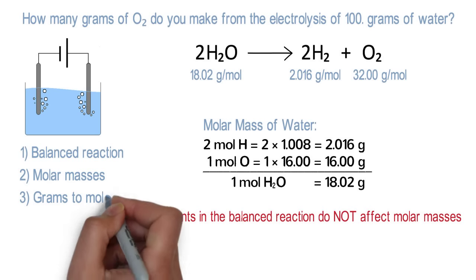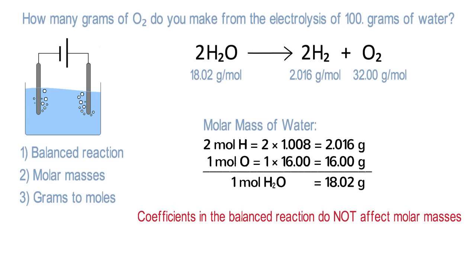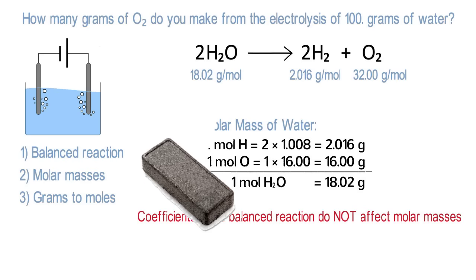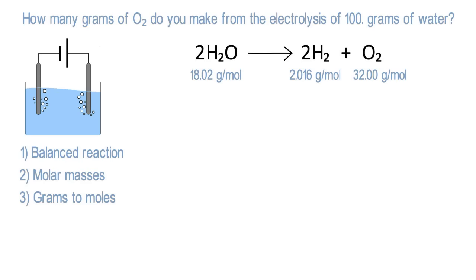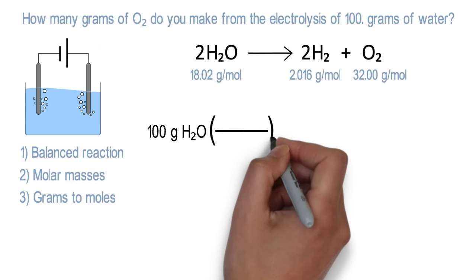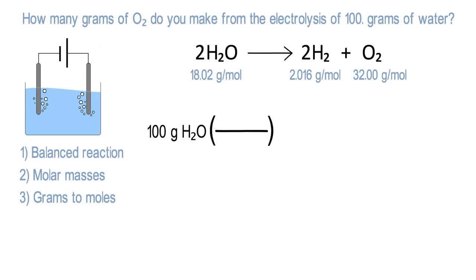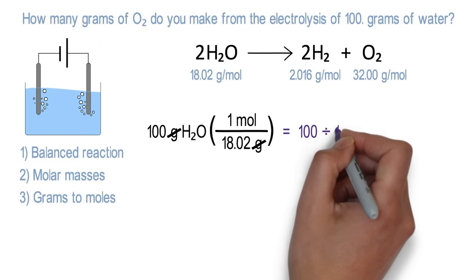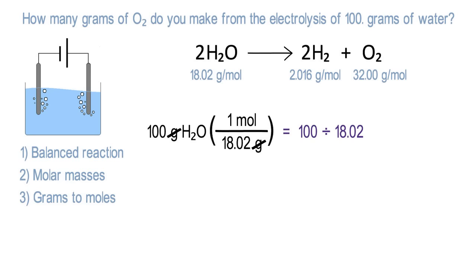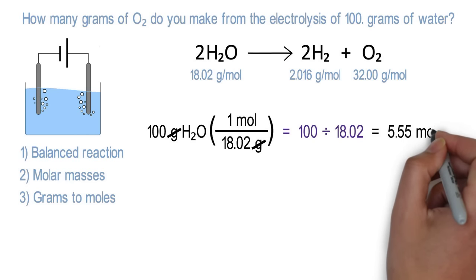Step 3: Convert the mass of your known quantity to moles. Reread the question — the known quantity is 100 grams of water. Write this down first. To convert this to moles, multiply it by a fraction. The molar mass of water is the conversion factor. Because we started with grams, we write 18.02 grams on the bottom and 1 mole on the top. Grams on the top and bottom cancel out. In your calculator, type 100 divided by 18.02, and the answer is 5.55 moles of water.